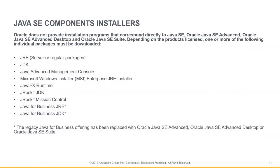No one installer on its own is mapped to a specific program. For example, to obtain the basic functionality of Java SE, you'll need to download the Java Runtime Environment and one of the Java Development Kits, such as JDK. If you also require use of the Java commercial features, you'll need to download Java Runtime Environment, JDK, and at least one more installer package with the components you're looking for.